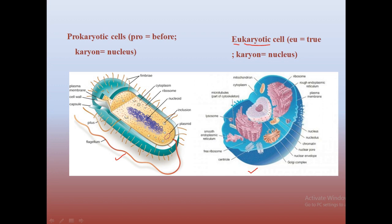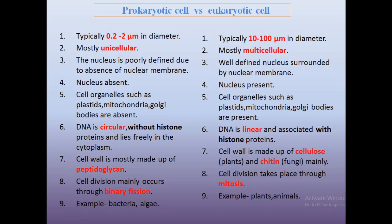Prokaryotic cells are typically 0.2 to 2 micrometers in diameter, so they are very small. Eukaryotic cells are 10 to 100 micrometers in diameter, so they are larger than prokaryotic cells. Prokaryotic cells are generally unicellular only, and in case of eukaryotes they are mostly multicellular, but they can be unicellular also.